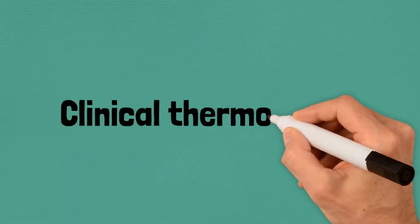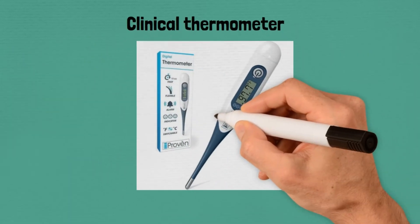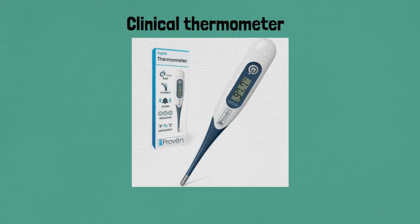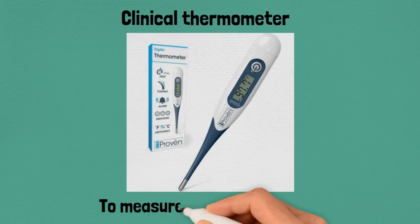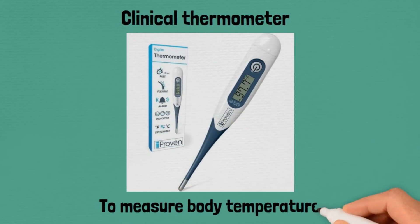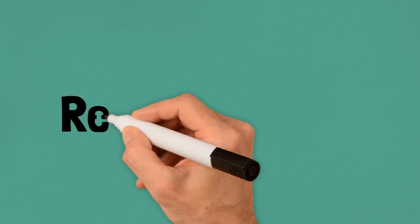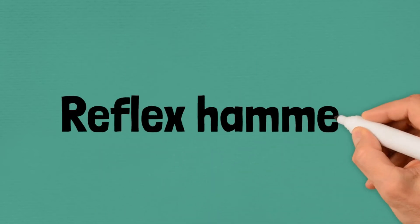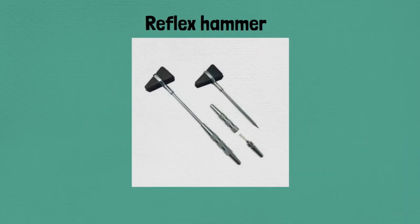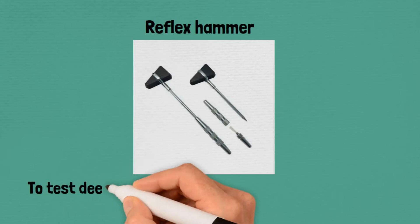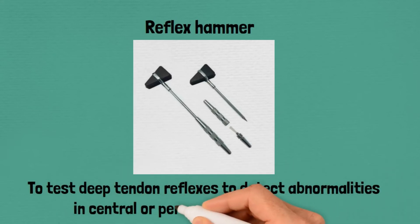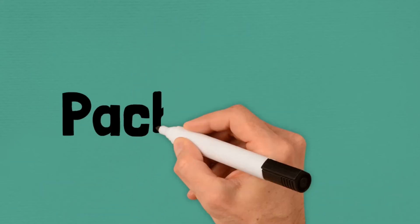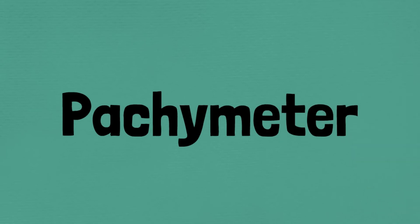Clinical thermometer, used to measure body temperature. Reflex hammer, used to test deep tendon reflexes and to detect abnormalities in the central or peripheral nervous system.